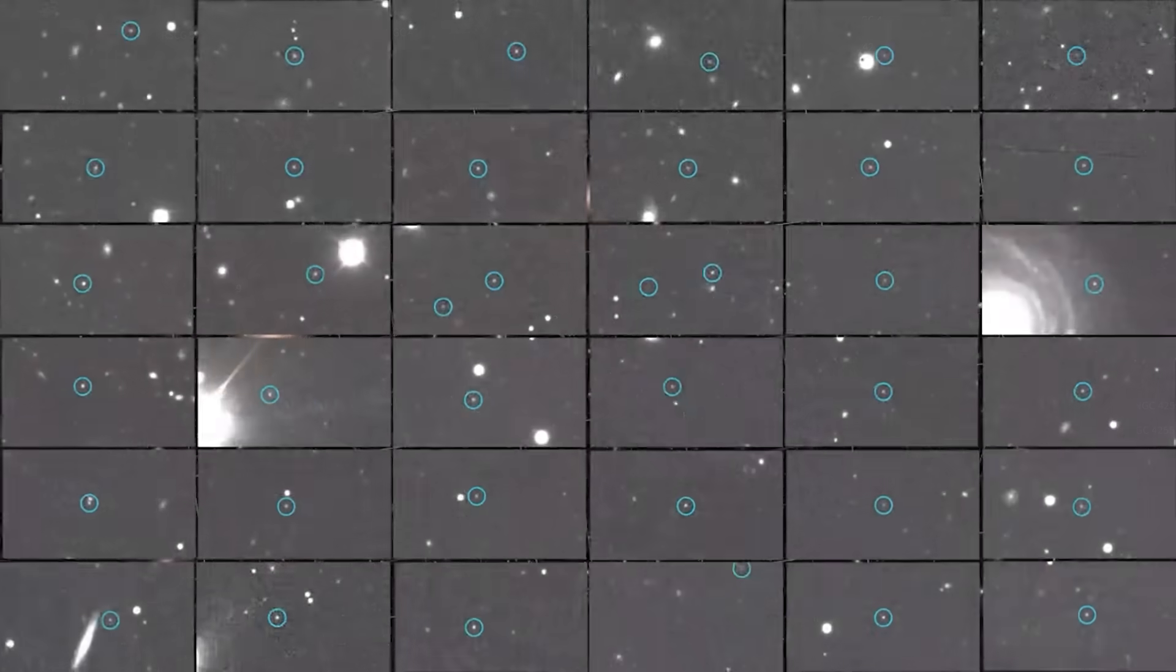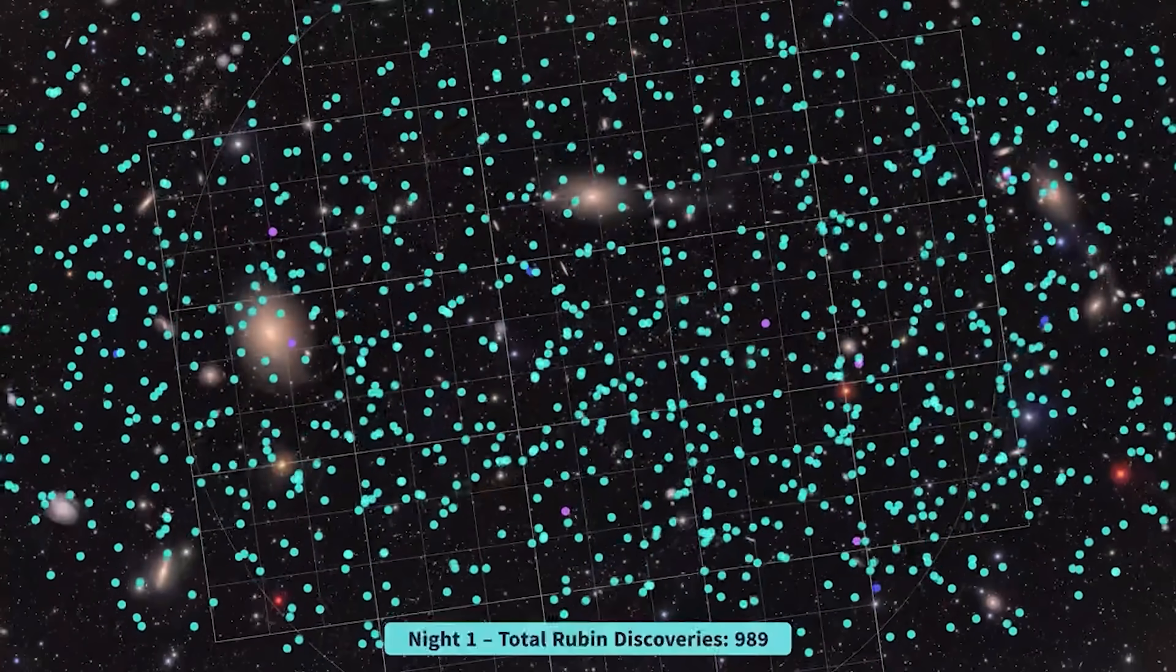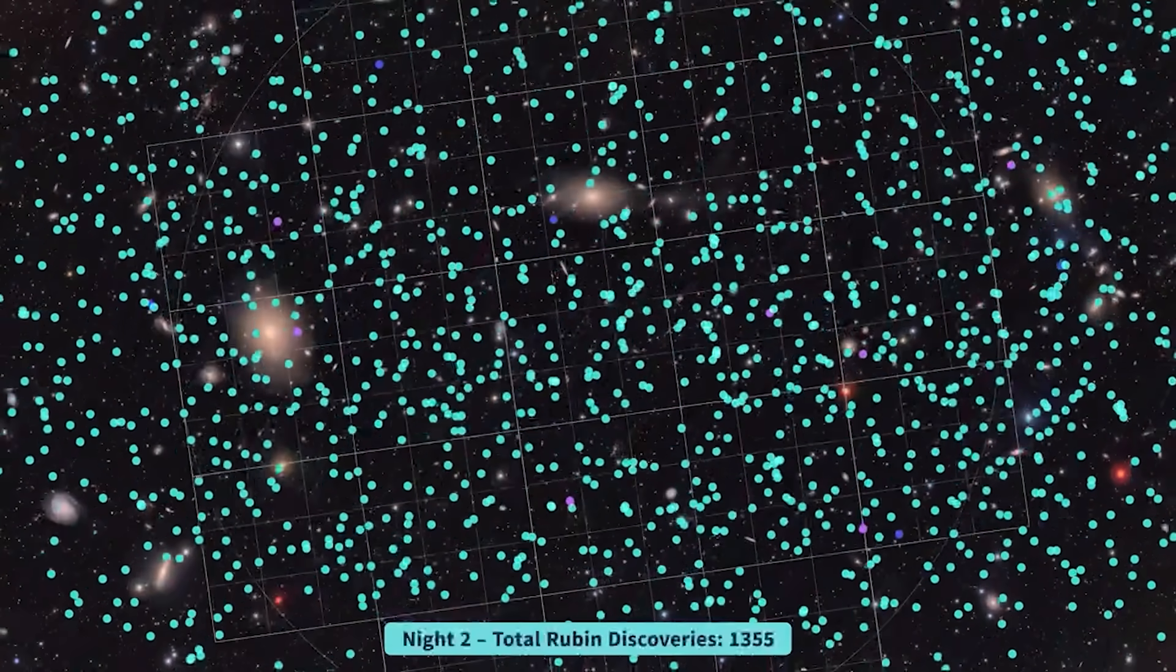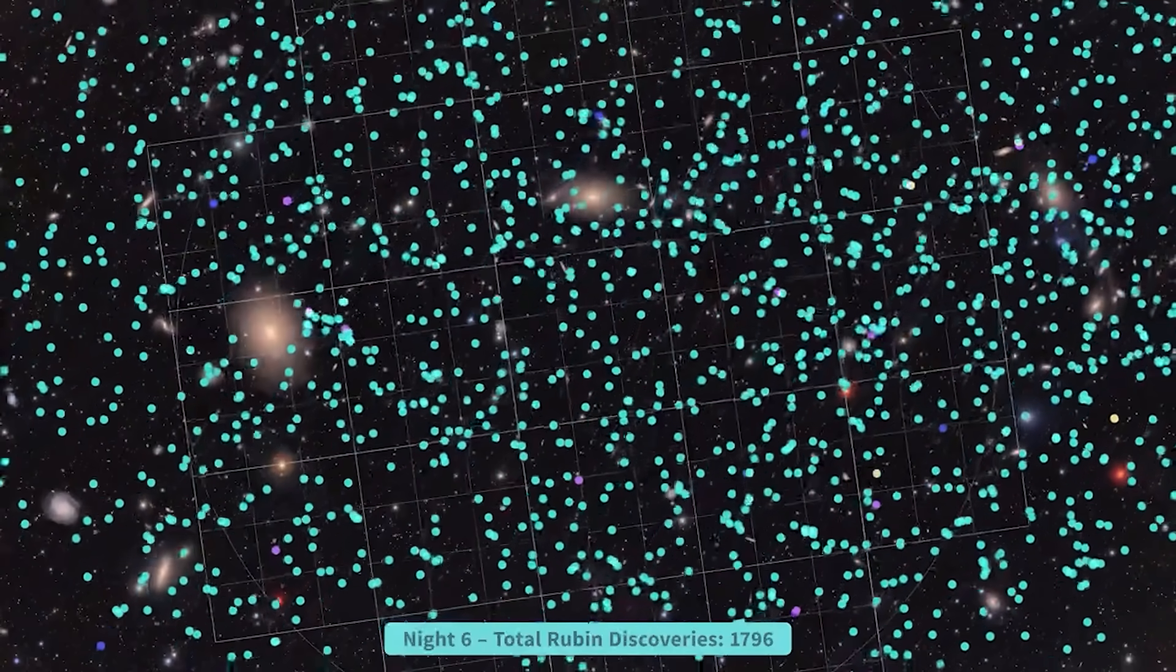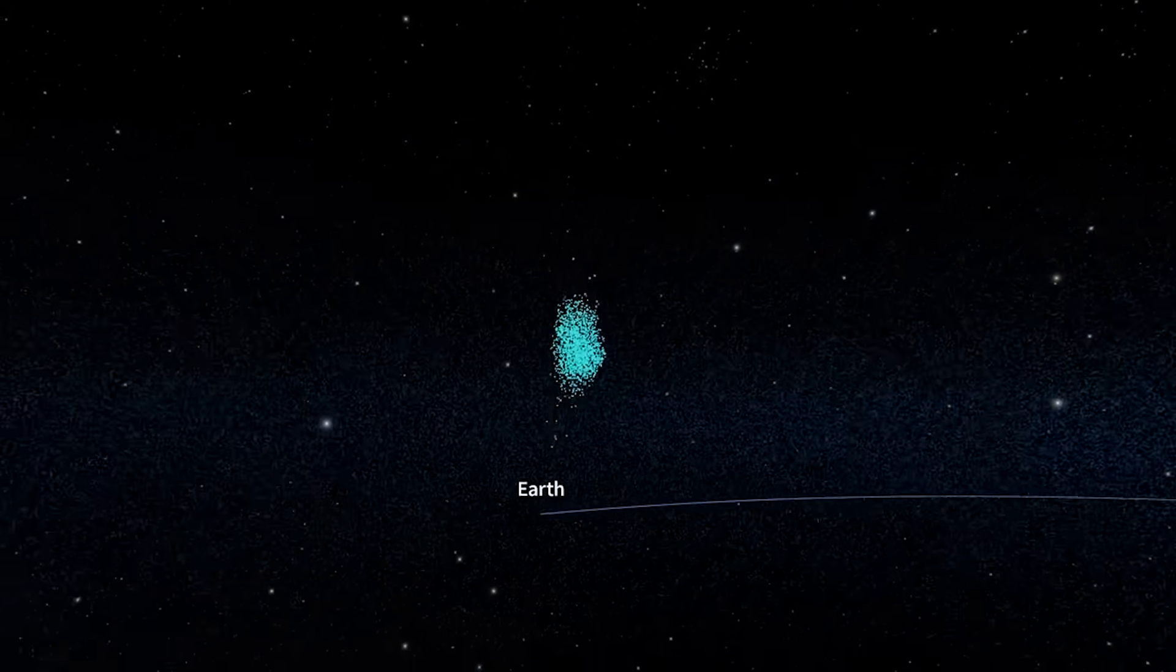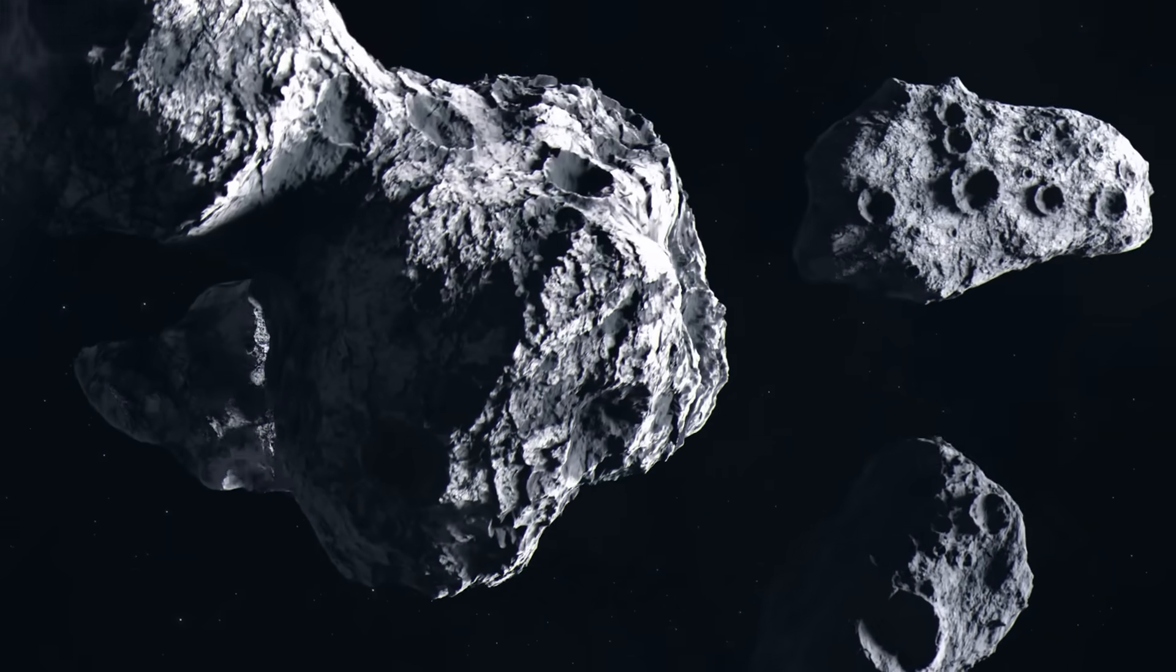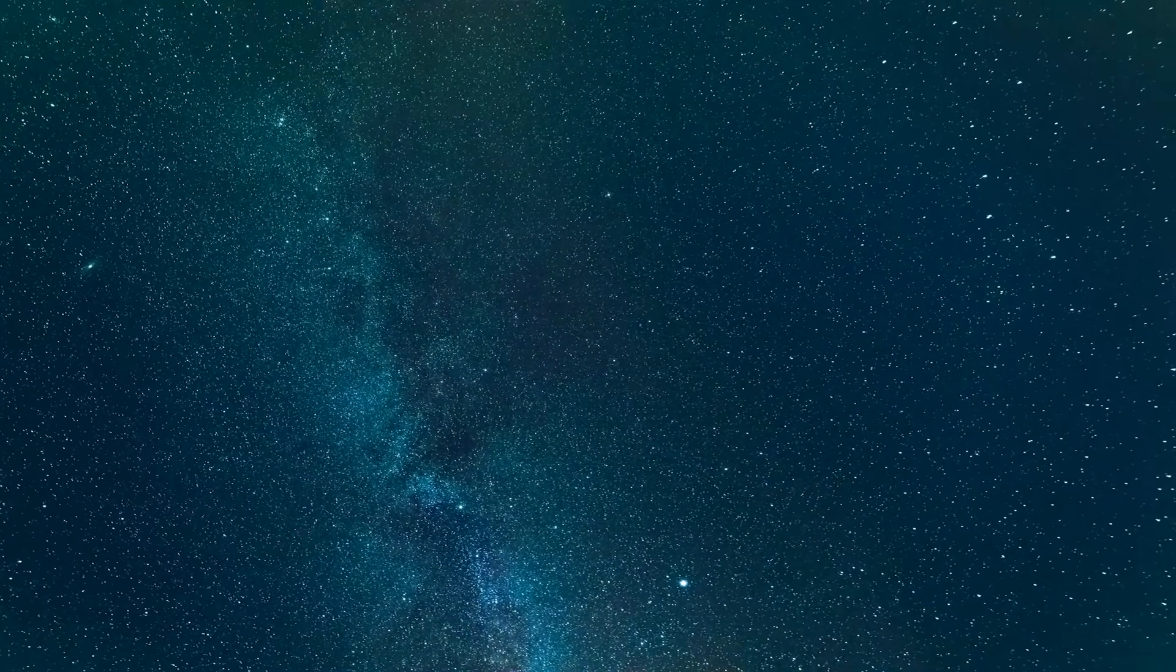In its first 10 hours of test observations spread across seven nights, it found more than 2100 previously unknown asteroids. That includes seven near-Earth objects, meaning they have potential to cross our path at some point. Right now, we know of a little over one million asteroids in our cosmic neighborhood. Rubin is projected to find nearly a million new objects every year for at least the next five years.